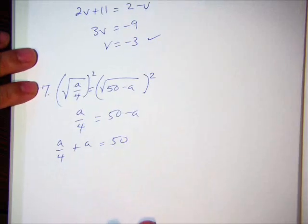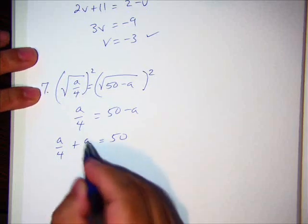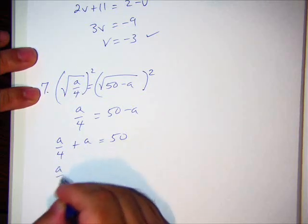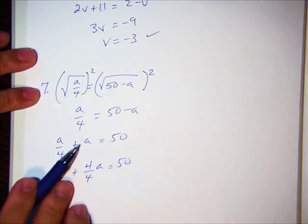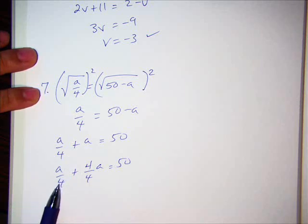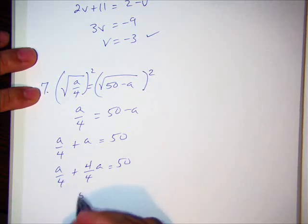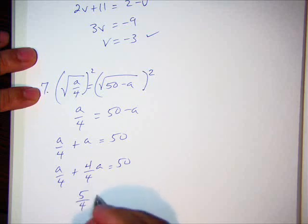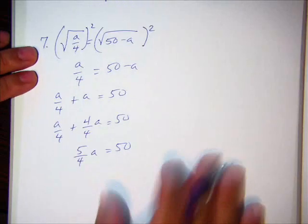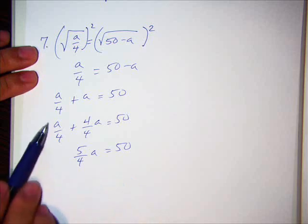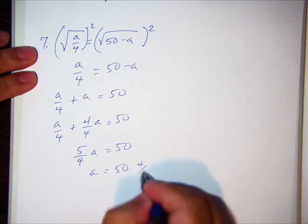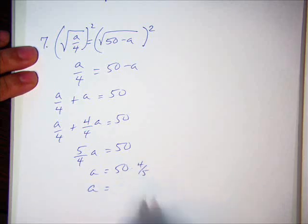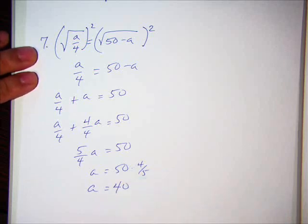Those of you who are fraction-phobes, I'm going to rewrite this A as 4/4 A. All right. 4/4 is the same as 1. That's 1A. What I've done is rewrite it with a common denominator. So that becomes 5/4 A. All right. Keep it in mind. That's like 1/4. Now to solve this, I'm going to multiply by 4/5. That comes, what, 40? All right. So let's check it out.